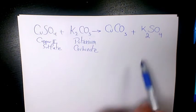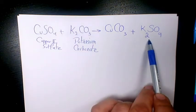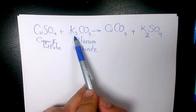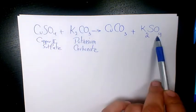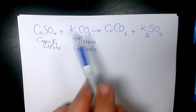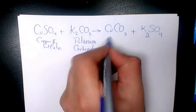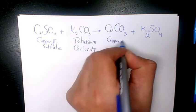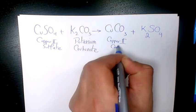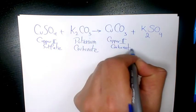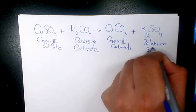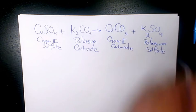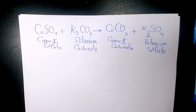Now let's see how to balance it. Potassium on the product side is 2, on the reactant side is 2. Cu is 1 and Cu is 1. SO₄ is 1 and SO₄ is 1. CO₃ is 1 as well. This product I'm going to call copper(II) carbonate, and here we have potassium sulfate. So that's how we balance it.